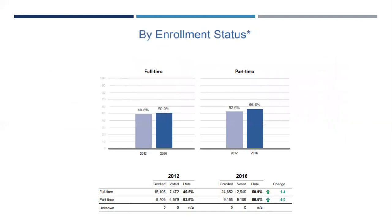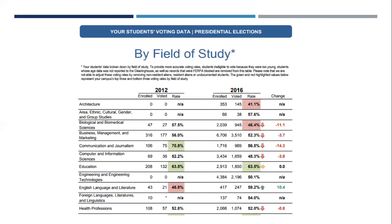Another breakdown we provide is enrollment status by full- or part-time. We found this is helpful for campuses where they may have an even divide among their student population that doesn't follow other trends — their part-time students may be just as likely to be 18 to 21 as they are to be 30 to 35. We hope this helps you target your energy and think about who you're engaging in your electoral engagement strategies. As a reminder, this data does not exclude non-resident aliens.